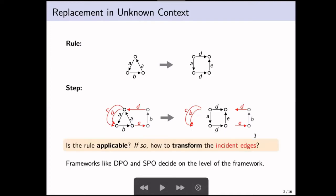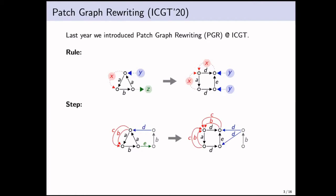So the question always is, is your rule application applicable in such a context? And if so, how should these incident edges be transformed? If you take two frameworks like DPO and SPO, they decide this question on the level of the framework. SPO will allow you to always proceed with the replacement, whereas DPO is more restrictive. It won't delete edges. You have to make sure that the points of contact are in your interface.